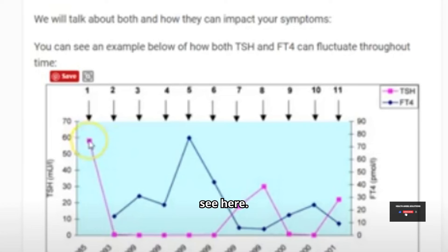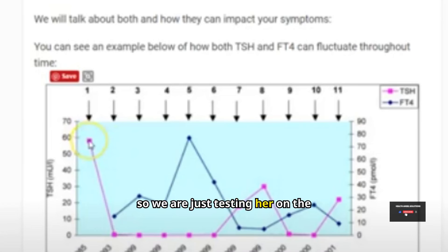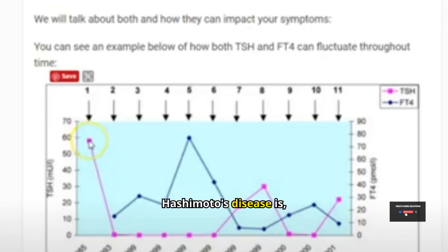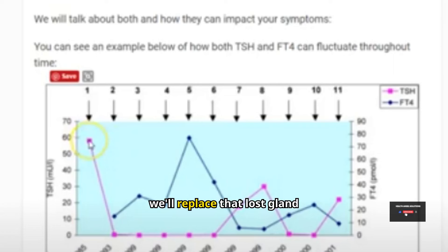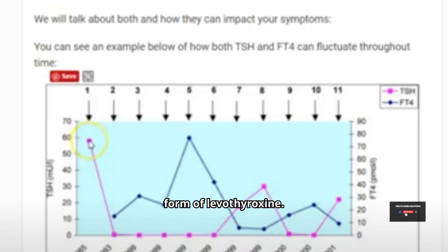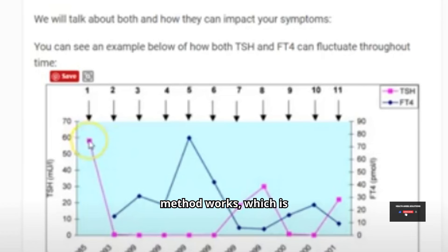As you can see here, this is done without medication, so we are just testing her on the fly. The standard of care for Hashimoto's disease is, as you may know, to take a wait-and-see approach, which means that once you have accumulated enough damage to your thyroid, we'll replace that lost hormone with some form of levothyroxine. This is exactly how the wait-and-see approach works, which is obviously not ideal.